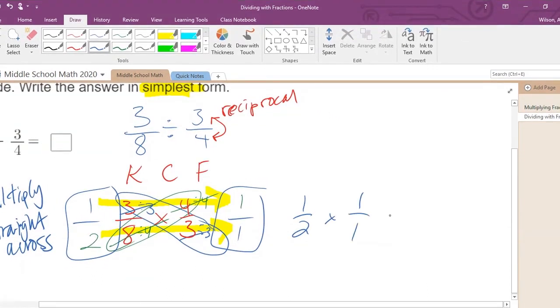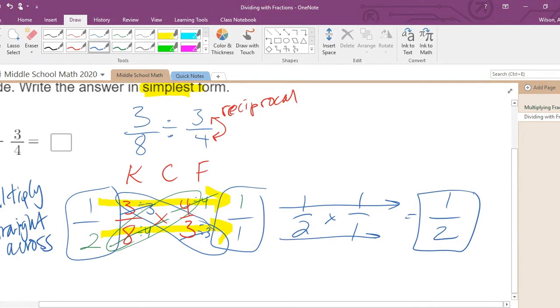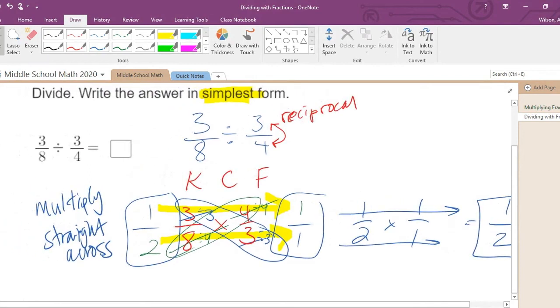One times one is one. Two times one is two. So the correct answer for three eighths divided by three fourths, believe it or not, is one half.